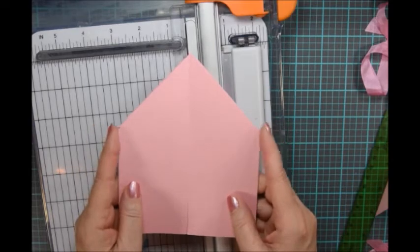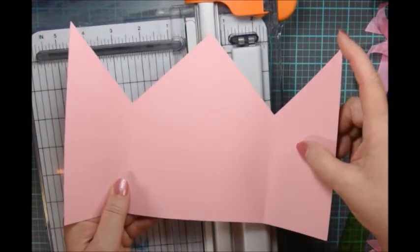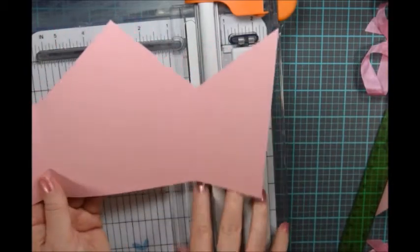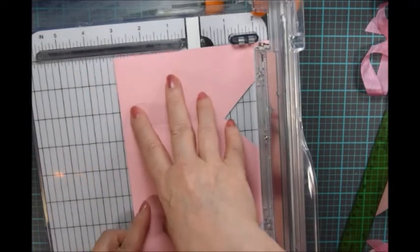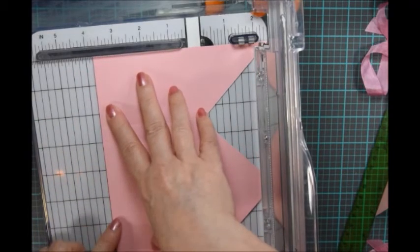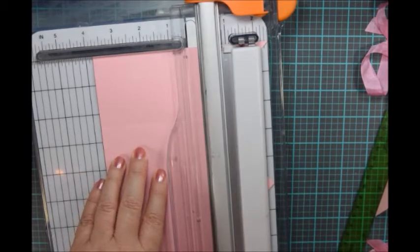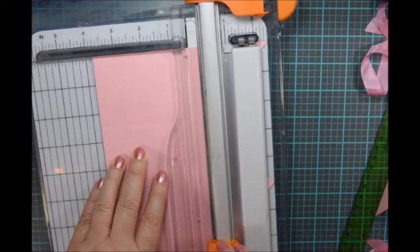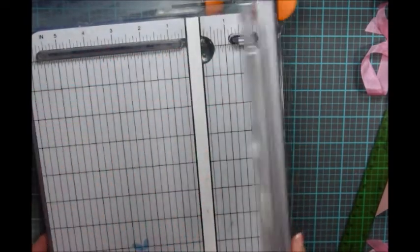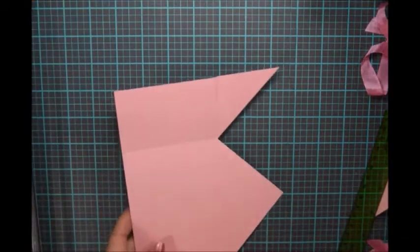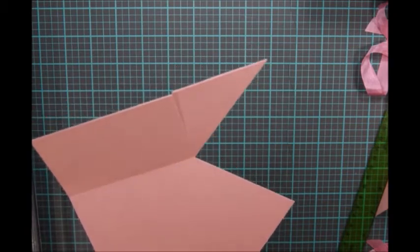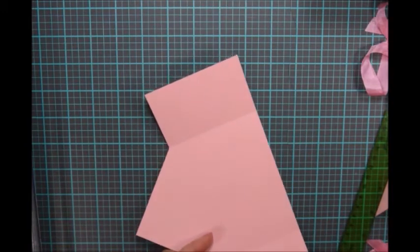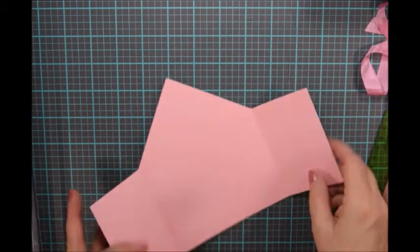So now I've got the pointed part of the tent. But when I open it, I still have these weird points up here. So I'm going to go ahead and cut those off. I'm going to line up the card with the bottom at 3 3/4 and I'm going to cut from the top to the score line. So now it looks like this.